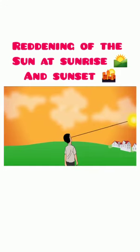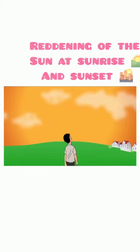At noon, the sun appears white as only a little of the blue and violet colors are scattered. Near the horizon, most of the blue light and short wavelengths are scattered away by the particles. Therefore, the light that reaches our eyes is of longer wavelengths. This gives rise to the reddish appearance of the sun.